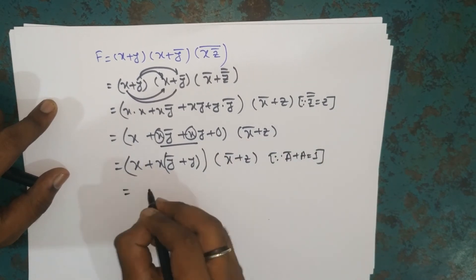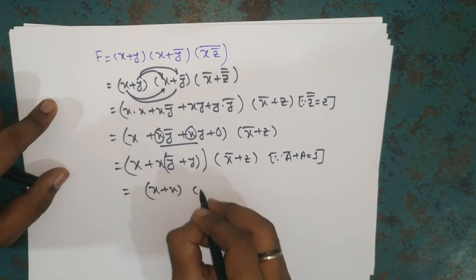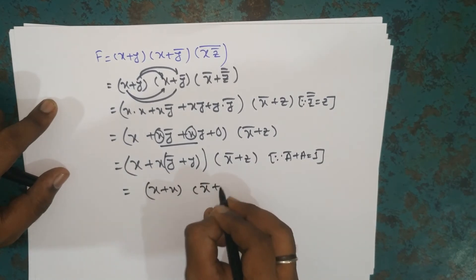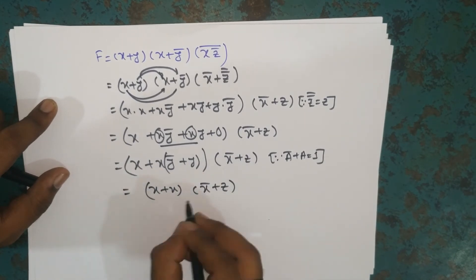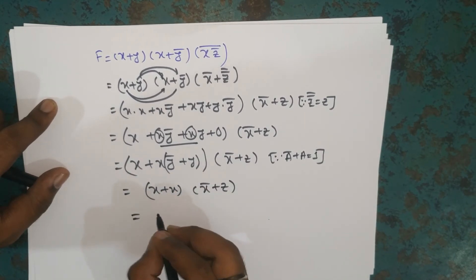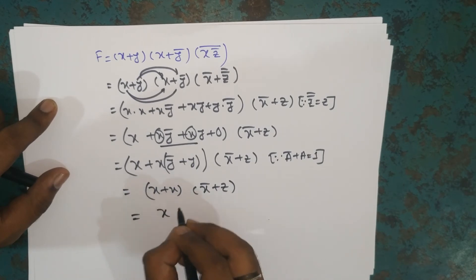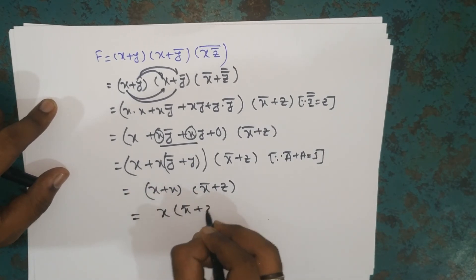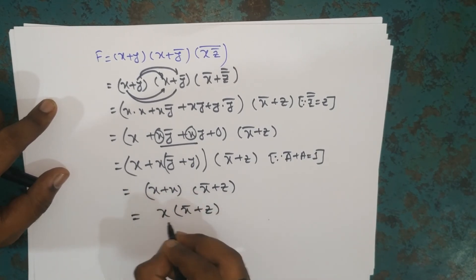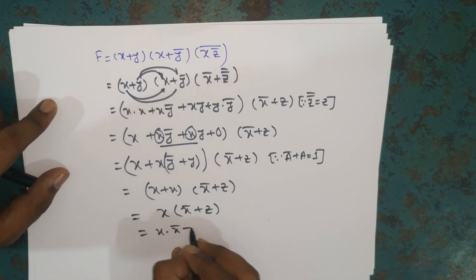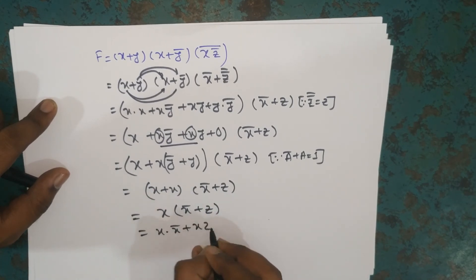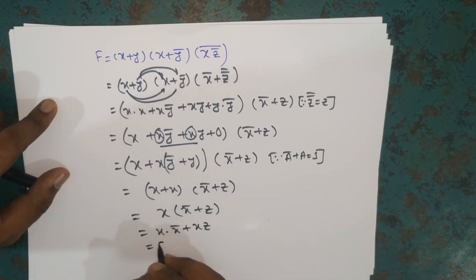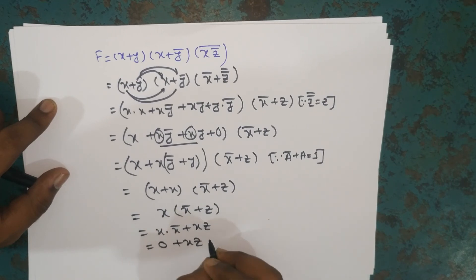So x plus x, then x bar plus z. x plus x is equal to x. If we have x bar plus x, then we have x bar plus x bar. x bar plus x bar is equal to 0, then x bar.